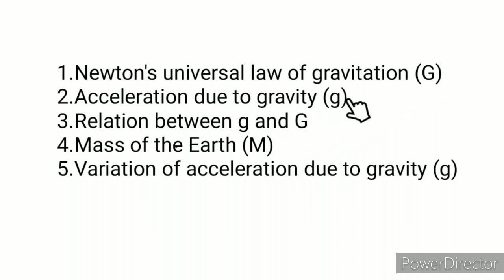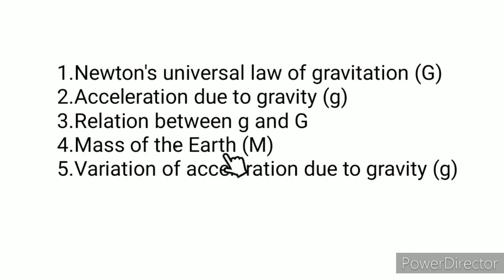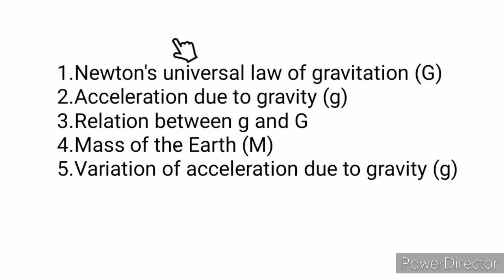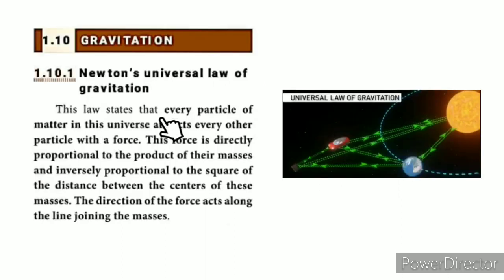The relation between capital G and small g. Capital G is the universal gravitational constant and small g is the acceleration due to gravity. We will find out how to determine the mass of the Earth using this relation. Also, we will look at the variation of g and how it changes.